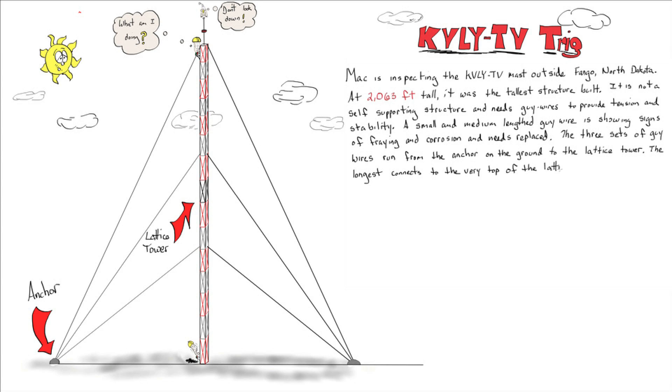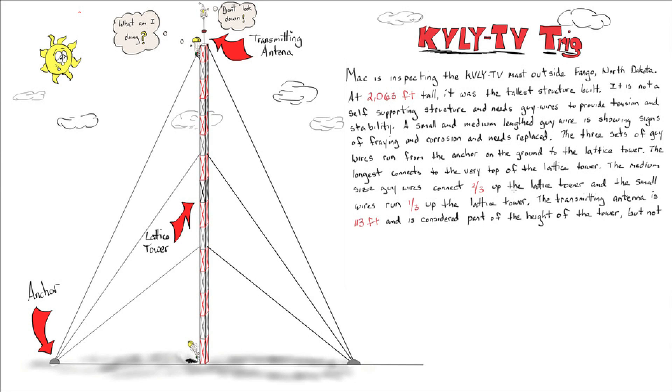The longest connects to the very top of the lattice tower. The medium-sized guide wire connects two-thirds up the lattice tower and the small guide wires run one-third up the lattice tower. The transmitting antenna is 113 feet tall and is considered part of the height of the tower, but not a part of the lattice.